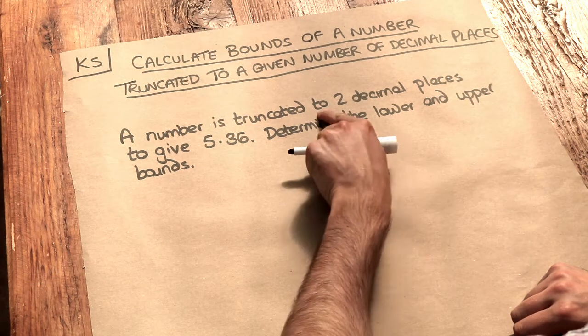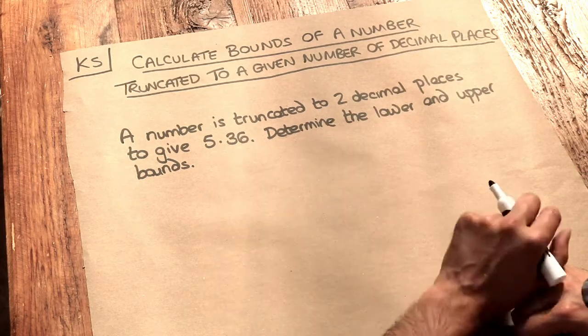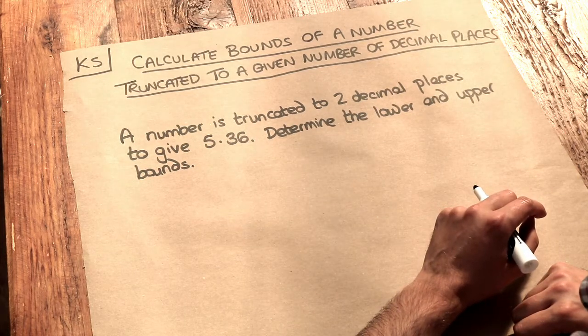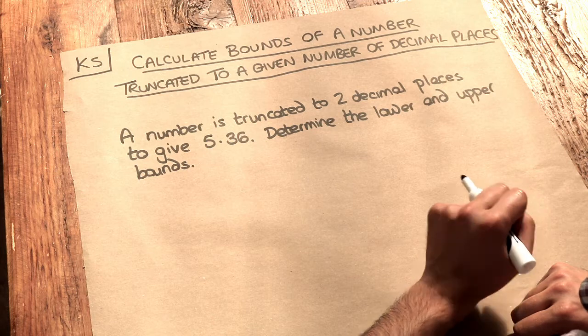Now a number is truncated to two decimal places to give 5.36. Determine the lower and upper bounds of that number.